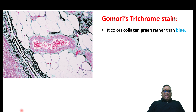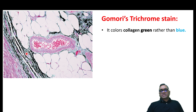The second stain is Gomory's trichrome stain. This is also very important and widely used for collagen. But in Gomory's trichrome stain, collagen will be green in color — not blue, but green. All the green color you see is the collagen in Gomory's trichrome stain.